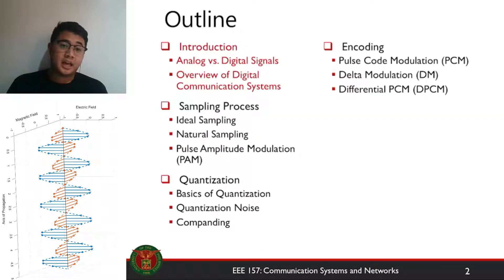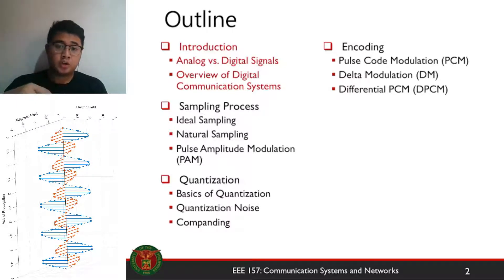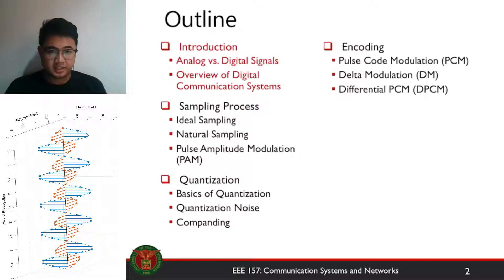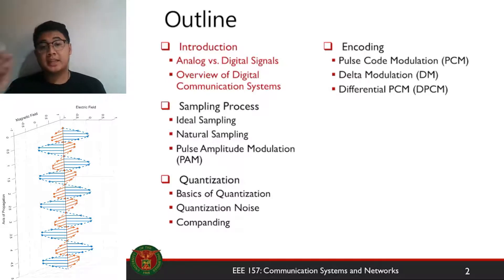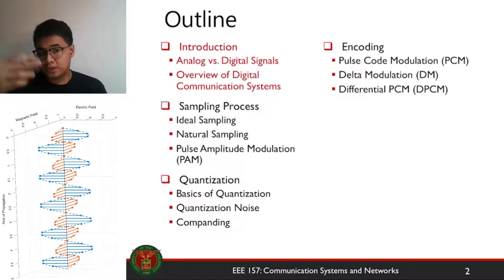This is the outline of the presentation. This lecture series will be composed of four parts. We're going to talk about the transition from analog to digital signals. The first step is to introduce analog signals and convert them to digital signals. There are three steps: sampling, quantization, and encoding. I'll give an overview of how they all work and how they interface with each other, then go into more specific details for each part of the transition.